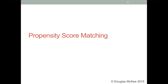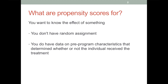Propensity score matching is a common technique used to estimate the effects of a treatment or program when you haven't run a randomized controlled experiment. In particular, it's used when you have observational data that includes pre-existing characteristics that determine whether or not each individual received the treatment. In this video, I will work through a simple example of how it works and give you the basic intuition for the method. I'll also talk about how to assess how well the method works and discuss its advantages and disadvantages relative to multiple regression. There are other ways to use propensity scores in estimation of treatment effects, but I'm going to focus on matching in this video.